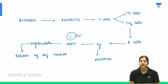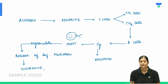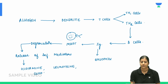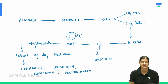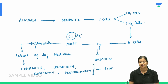The mediators released during degranulation are histamine, serotonin, leukotrienes, and prostaglandins. These are all mediators of inflammation, and when released, they trigger an inflammatory process resulting in symptoms.